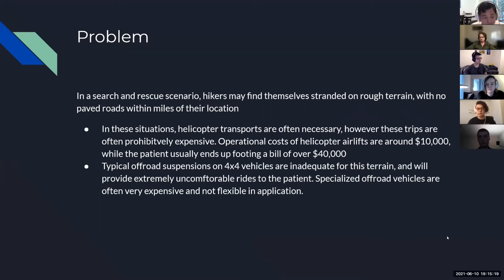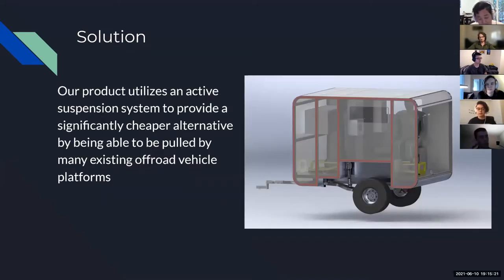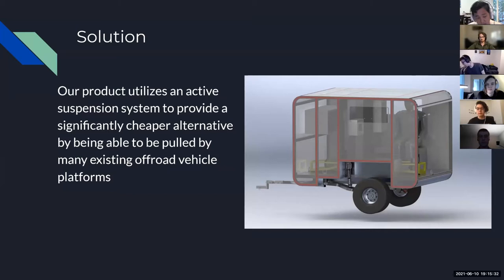We have an off-road ambulance trailer that utilizes active suspension. Our product uses an active suspension system to provide a significantly cheaper alternative. We chose a trailer system because it can be pulled by many existing off-road vehicle platforms, so it doesn't require purchasing a unique vehicle with a whole drivetrain — making it a significantly cheaper cost alternative to other systems.